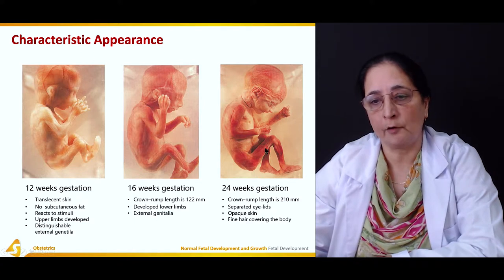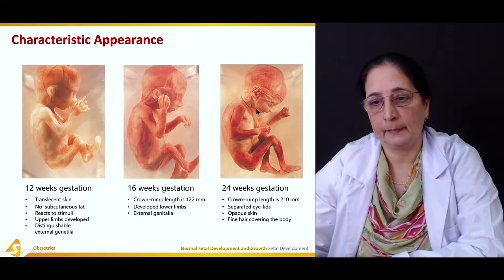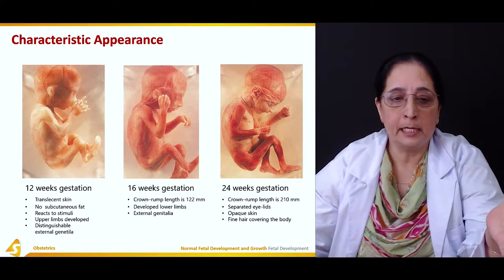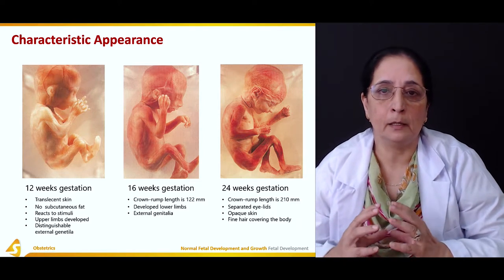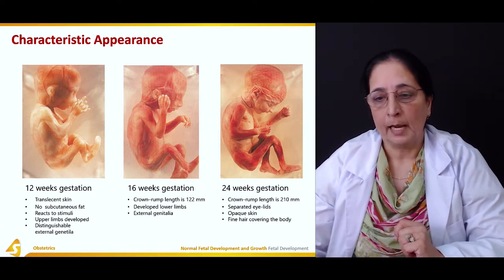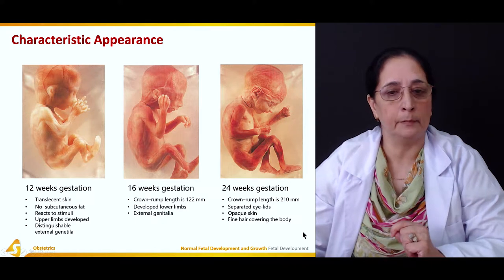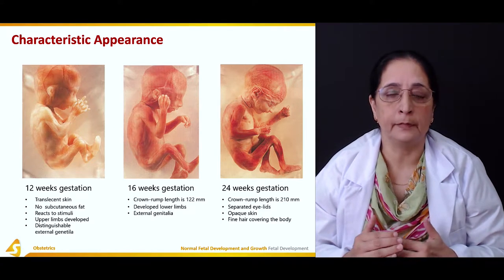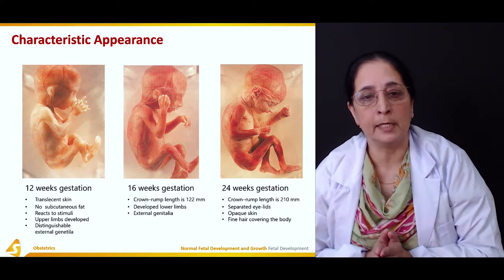At 24 weeks gestation, the crown-rump length is 210 millimeters. The eyelids are now separated, and the skin becomes opaque due to increasing deposition of subcutaneous fat. Fine hair is also present, covering the body. These are the characteristic differences in fetal appearance at 12 weeks, 16 weeks, and 24 weeks gestation.